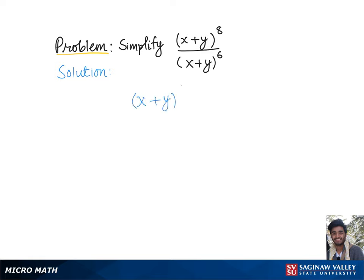To simplify (x+y)^8 over (x+y)^6, let's review the quotient rule, which says to divide one exponent by another,